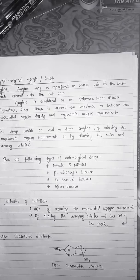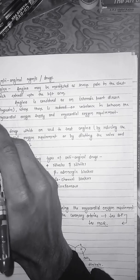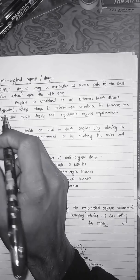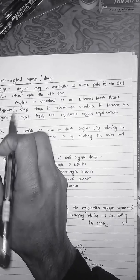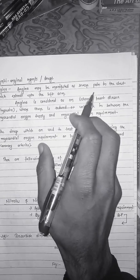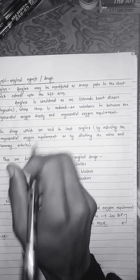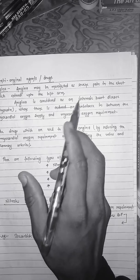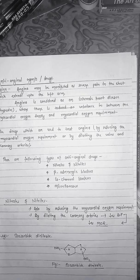Here we are talking about an important class of cardiovascular drugs — anti-anginal drugs. Anti-anginal drugs are the drugs which are used to treat the condition of angina. Angina may be manifested as a severe pain in the chest which extends up to the left arm.